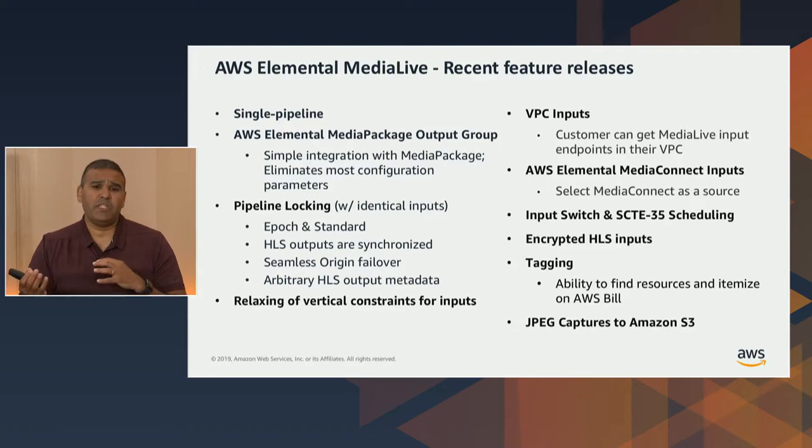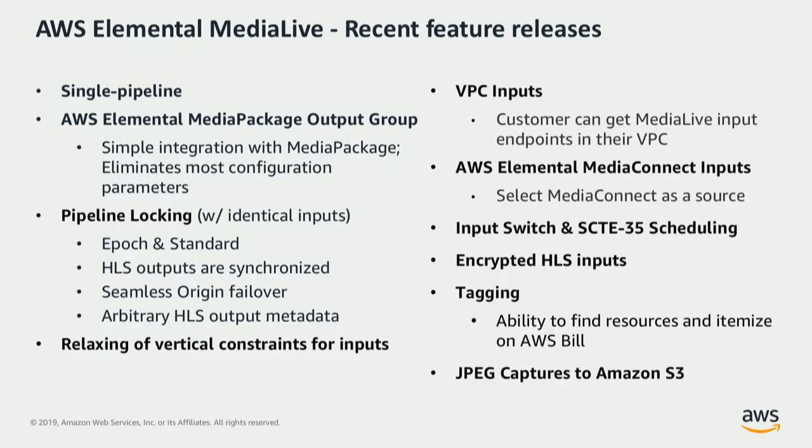Pipeline locking gives you seamless ability to failover from an origin to multiple different types of content that are locked and identical. Vertical strength is very interesting because it allows you to provide different types of portrait, horizontal mode, or vertical distribution for bringing your content into MediaLive. And the last recent feature is encrypted HLS inputs, which allows you to bring encrypted content into MediaLive and send it out through an ABR stack without having to worry about it being decrypted or pilfered along the way. For more information, please contact me or reference the Amazon website, which has great documentation on these individual features.